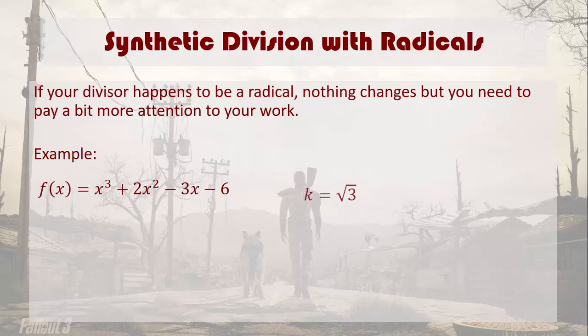So let's say that we have x cubed plus 2x squared minus 3x minus 6, and we're supposed to divide by the square root of 3. Okay, so you're going to go through the same motions. It's going to look like this.